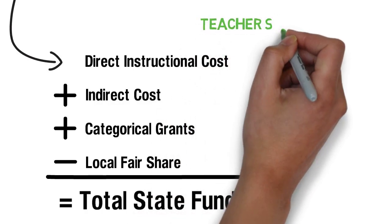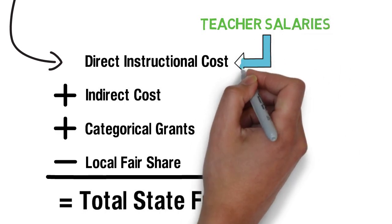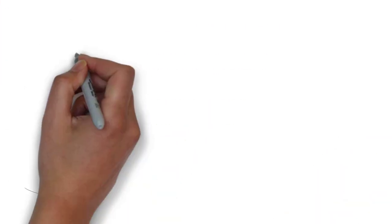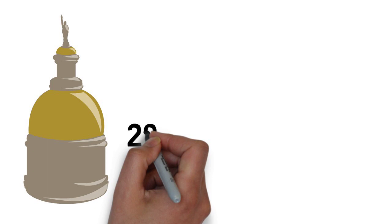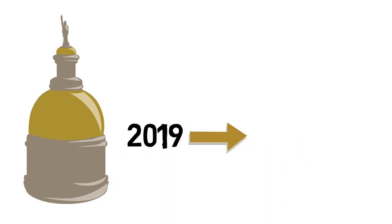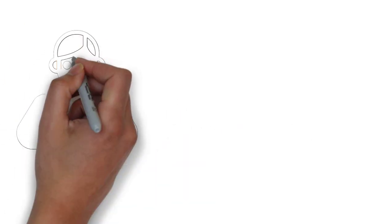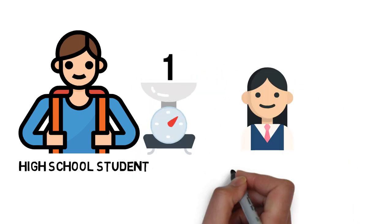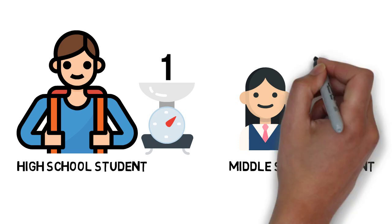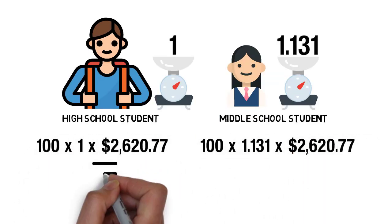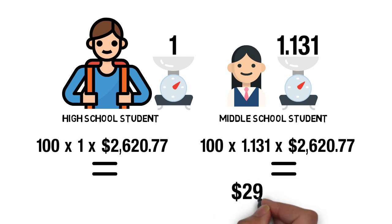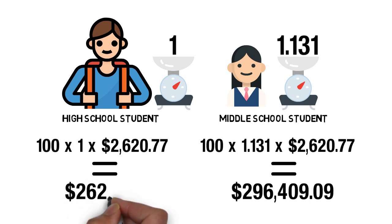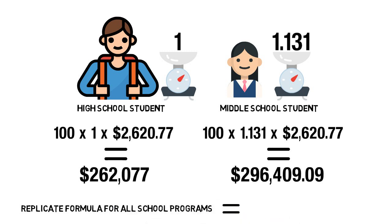Teacher salaries make up the bulk of the first bucket in the QBE formula: direct instructional cost. Each year, Georgia's General Assembly comes up with a base dollar amount to fund for each student — in 2019, it was $2,620.77. Every program the state pays for is given a weight. When QBE was created, general education high school students were considered the least expensive to educate and assigned a weight of one. Middle school, by comparison, is weighted slightly higher. At its most basic, if you had 100 high schoolers and 100 middle schoolers, after multiplying by each weight and the base amount, the middle school would be given just under $300,000 while the high school would get $262,000. Once school systems replicate this process for each program, the final dollar amount is how much each should be given for direct instructional cost.